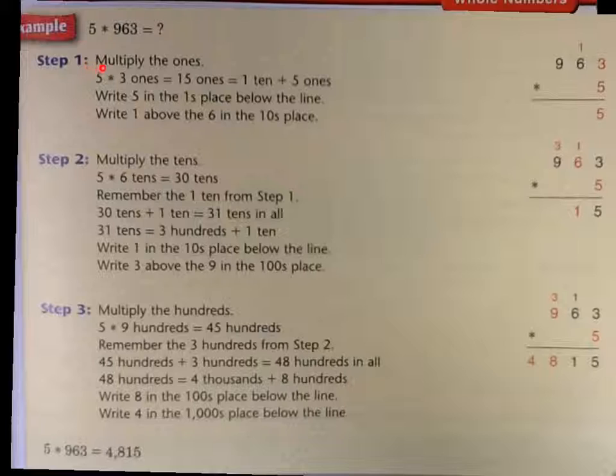Then it says multiply the 1's. So 5 times 3 ones equals 15 ones, which is 1 ten and 5 ones. You write the 5 in the ones place below the line, and carry the 1 to the 6. So 3 times 5 is 15. Put down the 5, carry the 1.